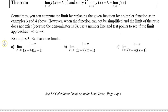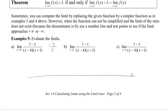Here we have a rational function. All three sub-questions use the same function — the first approaches from the right, the second from the left, and the third is the combination. When we plug in 4, we get negative 3 in the numerator but zero in the denominator. So the question is: what direction is it approaching? To find out, I'm going to draw a number line and identify the critical numbers, which come from the denominator and the numerator.